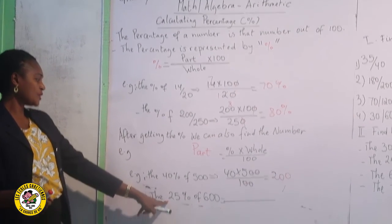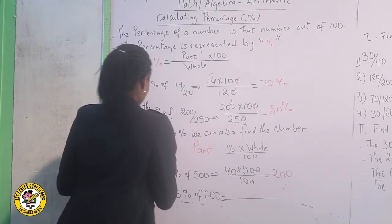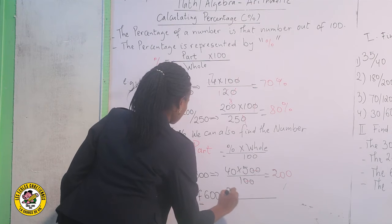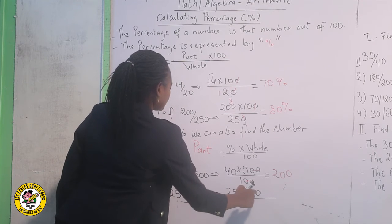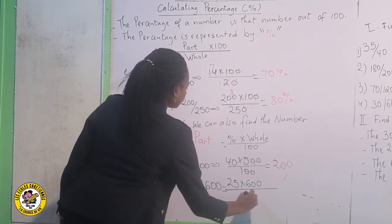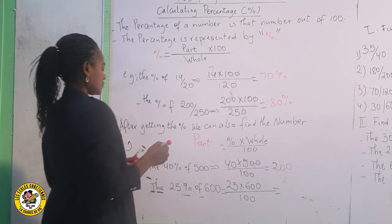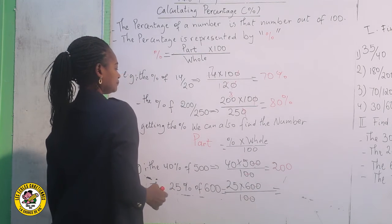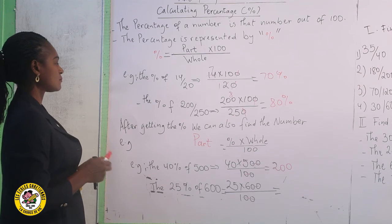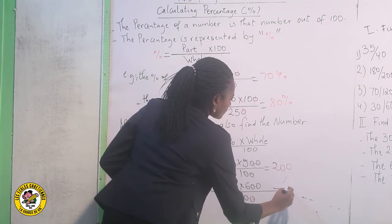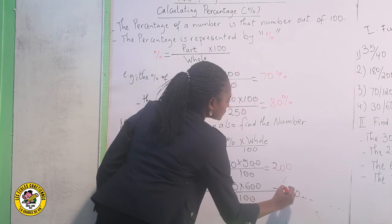The same way, we get 25% of 600. 25 times 600 over 100. We are going to simplify here, and then here, 25 times 6 will give us 150. This is the part found from the percentage.